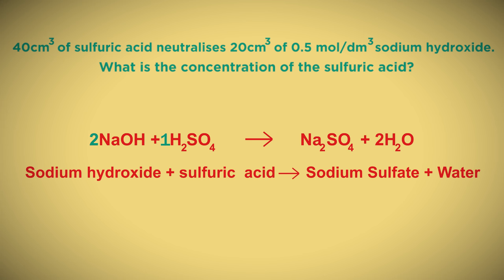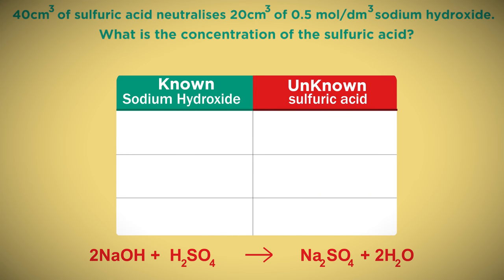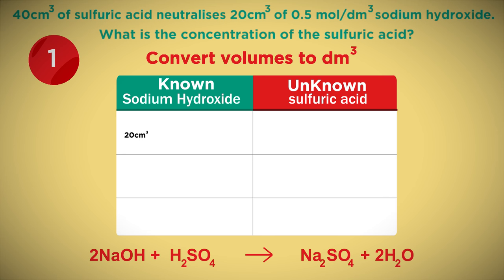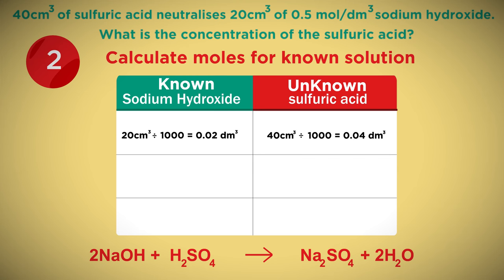We are now ready to do the calculations. Convert the volumes to cubic decimetres: 20 cubic centimeters divided by 1,000 equals 0.02 cubic decimetres, and 40 cubic centimeters divided by 1,000 equals 0.04 cubic decimetres. Now calculate the moles for the known solution, sodium hydroxide: the number of moles equals 0.5 multiplied by 0.02, which equals 0.01 mole.